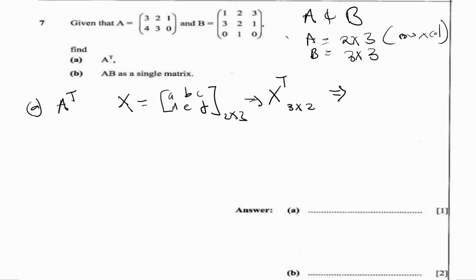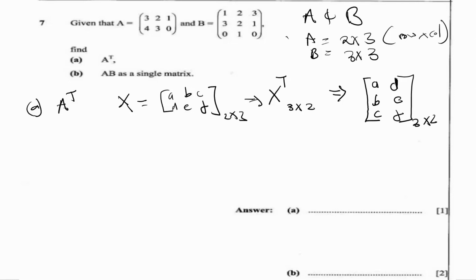To get the transpose, we convert the rows into columns and vice versa. So A and D become one row, B and E become another row, and C and F become the third row — giving us two columns. In the transpose, the rows of the original become the columns, so we get a 3 by 2 matrix with rows: [A, D], [B, E], [C, F].